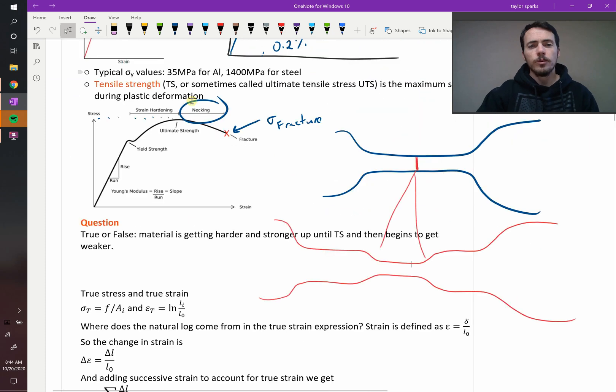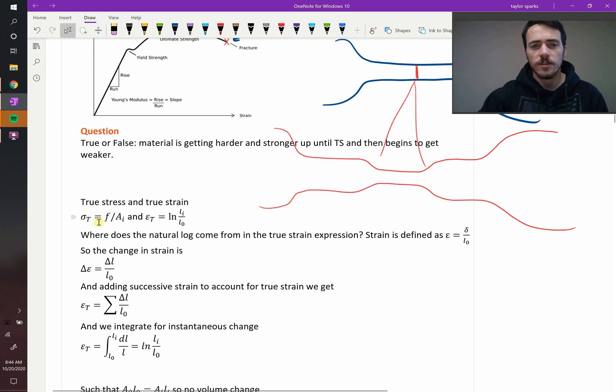Because of that, what you really need to do in a plot like this to plot it accurately to get true stress is you need to calculate true stress and true strain. Here's how you do it. True stress is defined by the force divided by your instantaneous area. Your instantaneous, or at any given moment, you take that area, not the area that you started with, because those are different.